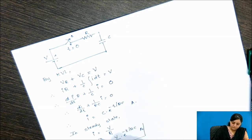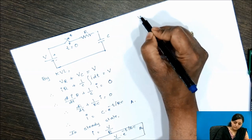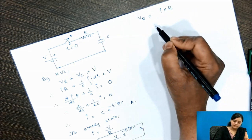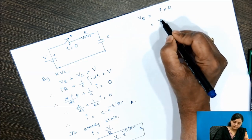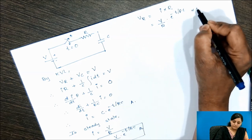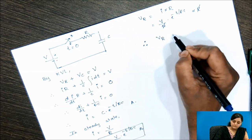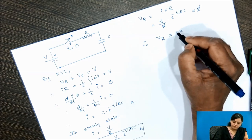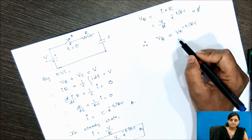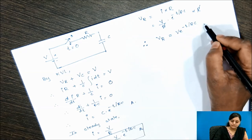Now let us find the voltage across the resistance, V_R = i × R. Since i = (V/R)·e^(−t/RC), multiplying by R gives V_R = V·e^(−t/RC) volts.